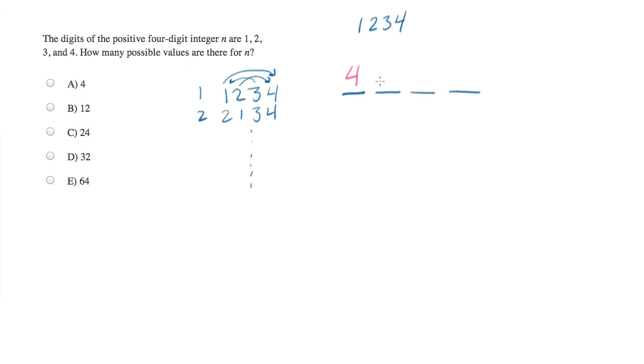Now, when I make my second choice for the second digit, how many choices will I have then? Well, I don't know which number I've chosen, but I do know that one of them is missing. So I'll only have three options left.